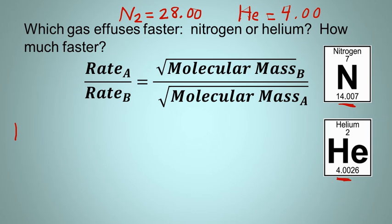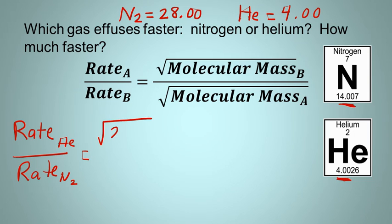I strongly recommend that you make gas A be the lighter gas. And so we're going to say that gas A is the helium. So the rate of helium over the rate of nitrogen is equal to the square root of the molecular mass of nitrogen, which is 28.00, divided by the square root of the molecular mass of helium, which is 4.00. So all we have to do here is take our calculator and find out what is the square root of 28 divided by the square root of 4.00.